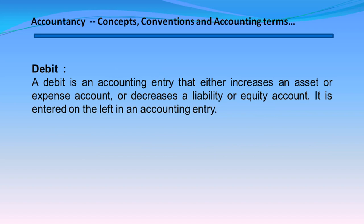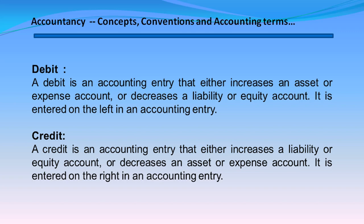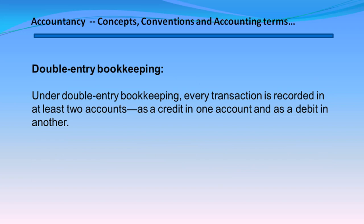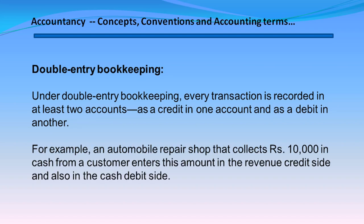Debit. A debit is an accounting entry that either increases an asset or expense account, or decreases a liability or equity account. Credit decreases an asset or expense account and is entered on the right in an accounting entry. Double Entry Bookkeeping. Under double entry bookkeeping, every transaction is recorded in at least two accounts — as a credit in one account and as a debit in another. For example, an automobile repair shop that collects Rs. 10,000 in cash from a customer enters this amount on the revenue credit side and also on the cash debit side.